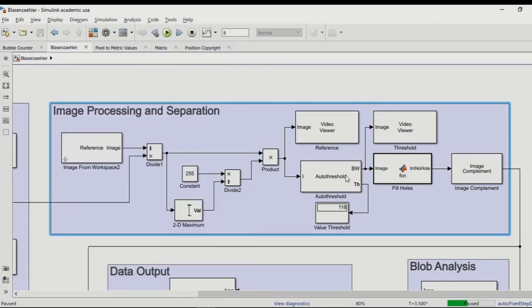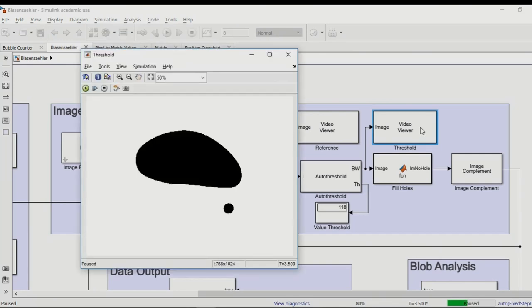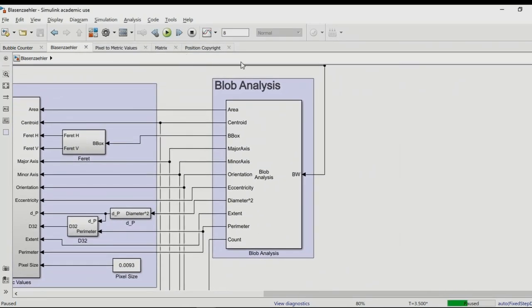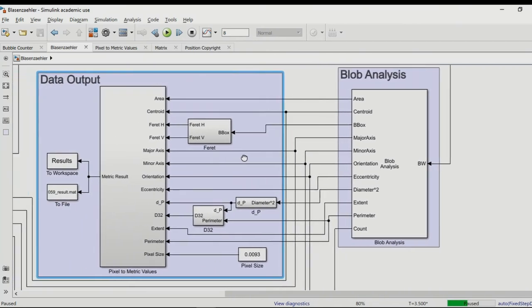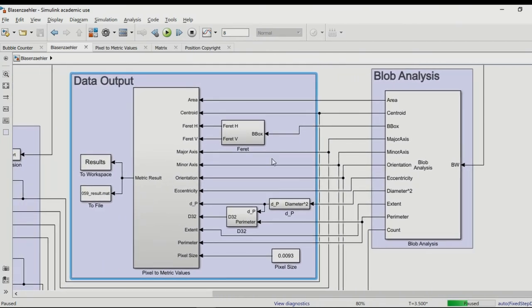The separation is done using Otsu's algorithm, which gives us a binary image with black bubbles and white background. This binary image is then analyzed using blob analysis, which gives us a variety of geometrical properties of the bubbles. For our needs, some more bubble sizes are calculated, like the ferret diameter and the d32 diameter.